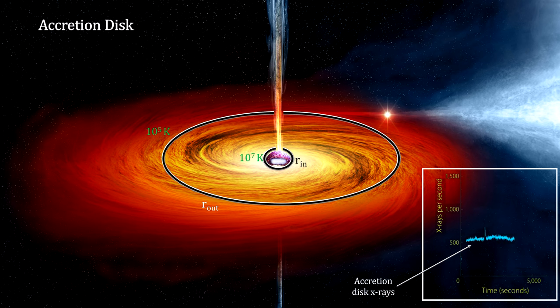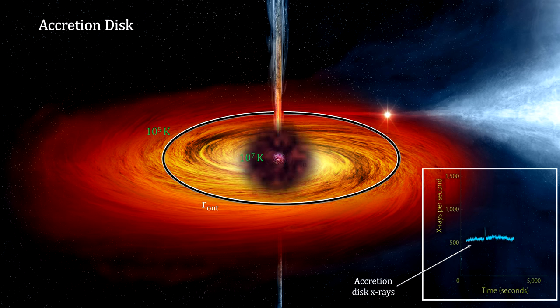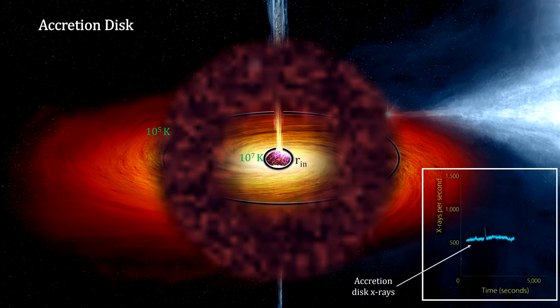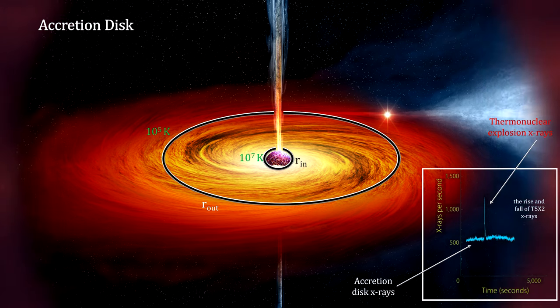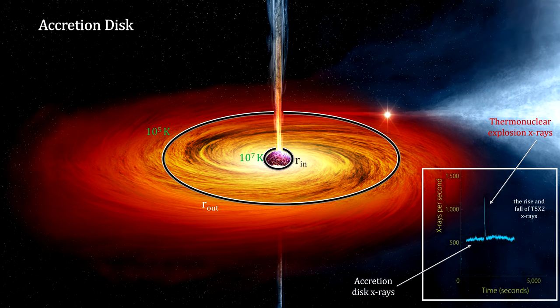Over time, the material builds up on the surface and ignites in a thermonuclear explosion. Such an event produces a bright flash of X-ray emissions called a Type I X-ray burst. Such bursts from low-mass neutron binary star systems are very common. Thousands have been observed to date from over a hundred accreting neutron stars.